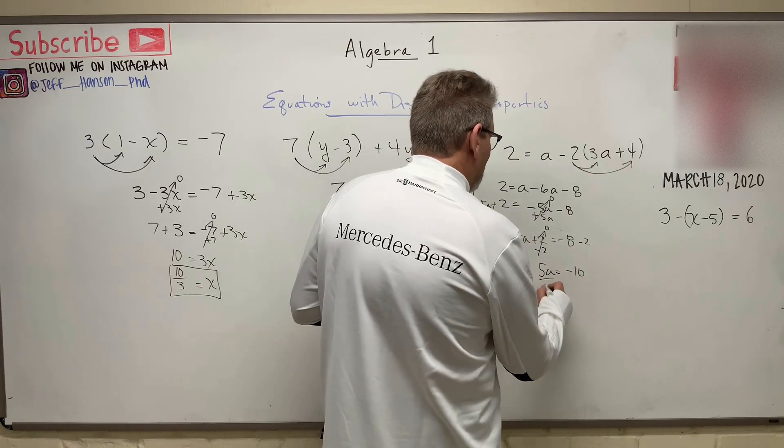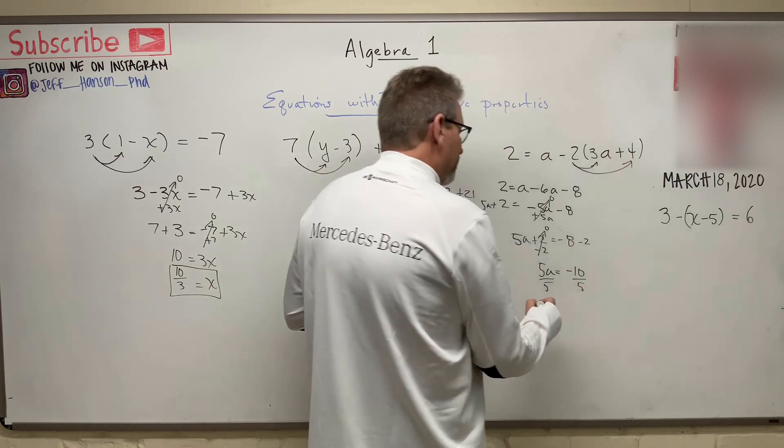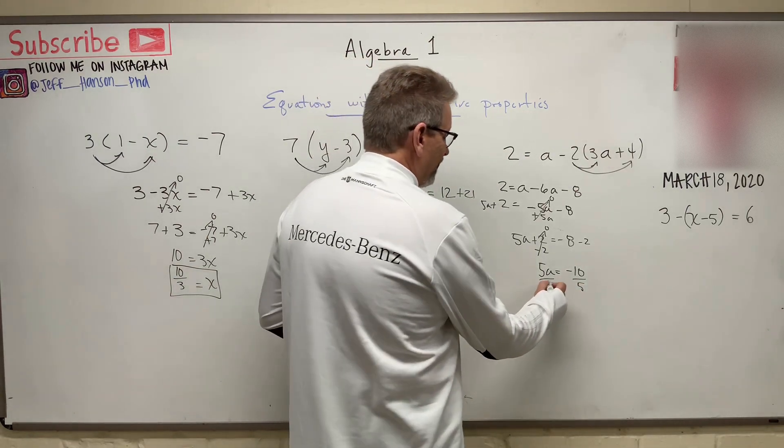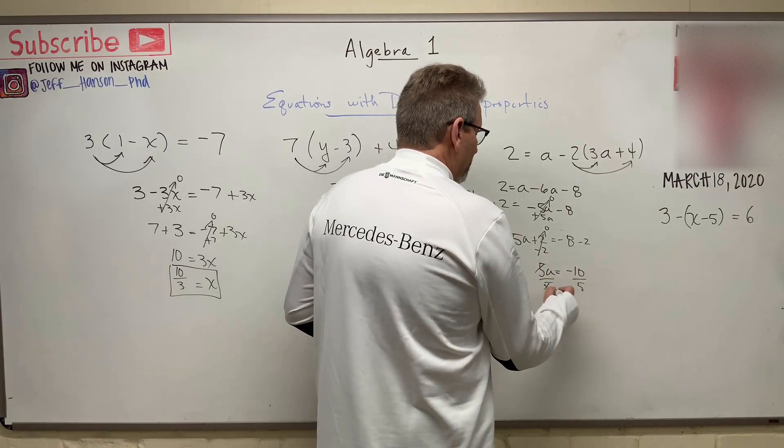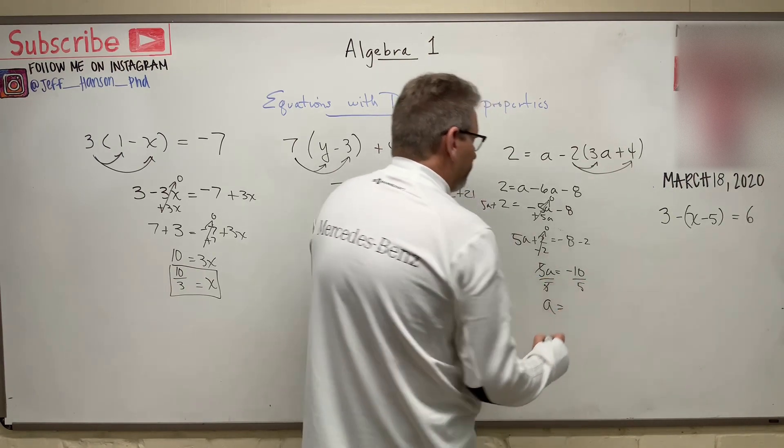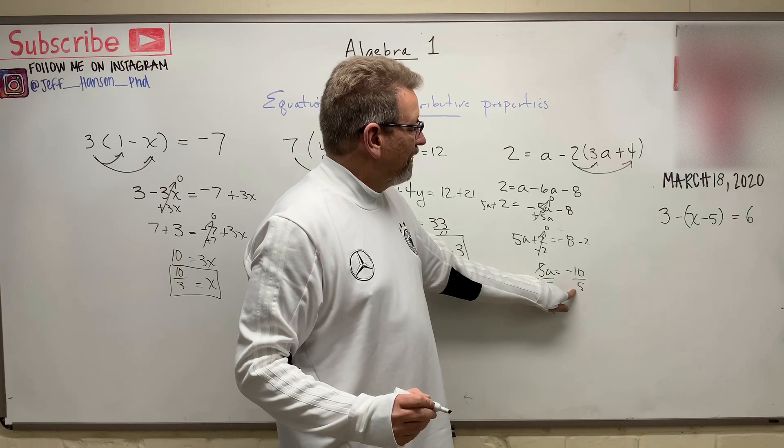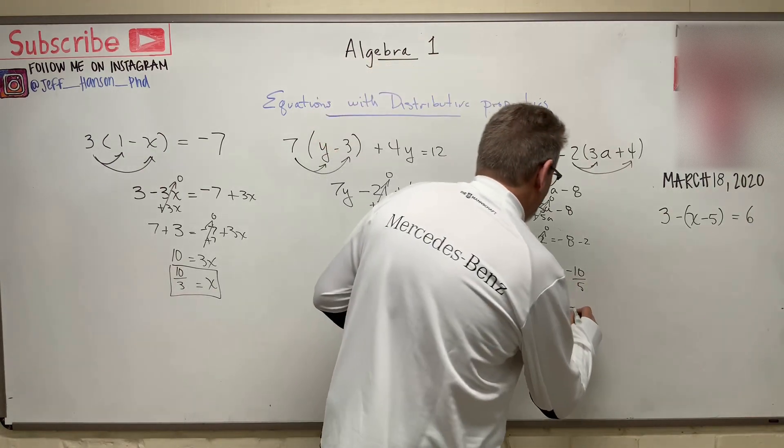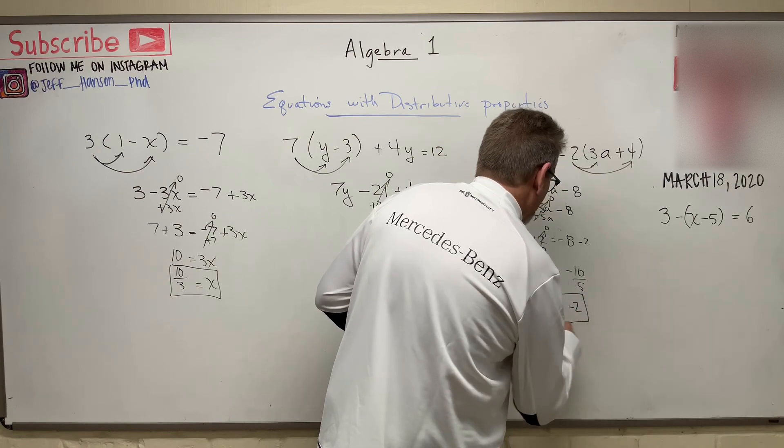So 5a equals negative 10. And so divide by 5, divide by 5. Remember, what we do to one side, you have to do to the other side. So my 5s divide away. And so a equals, what is 10 divided by 5? Negative 10 divided by 5. Negative 2.